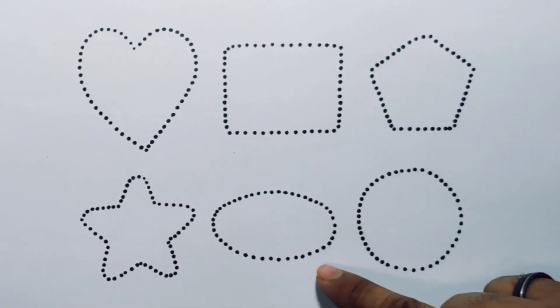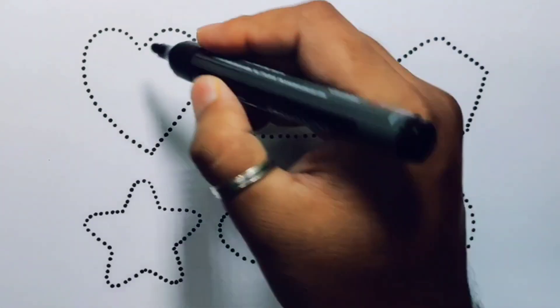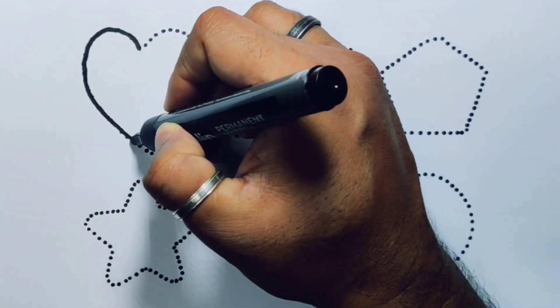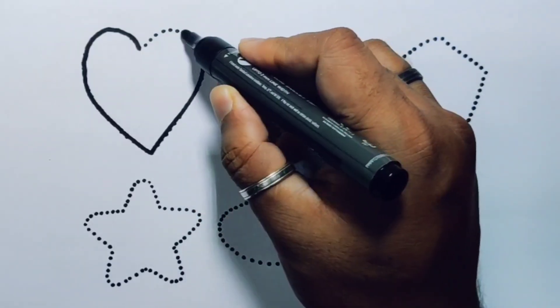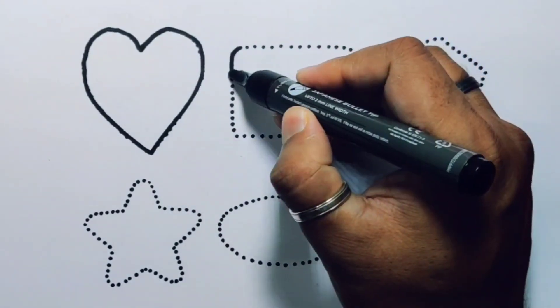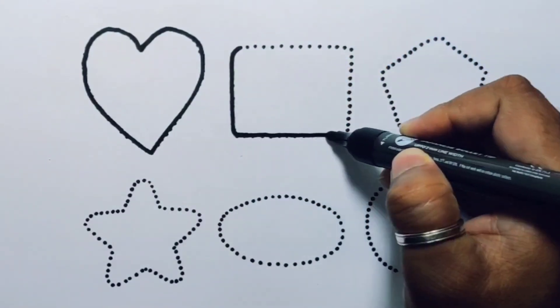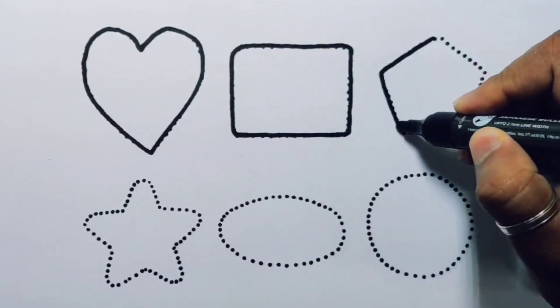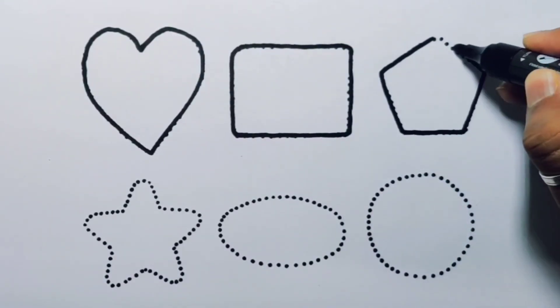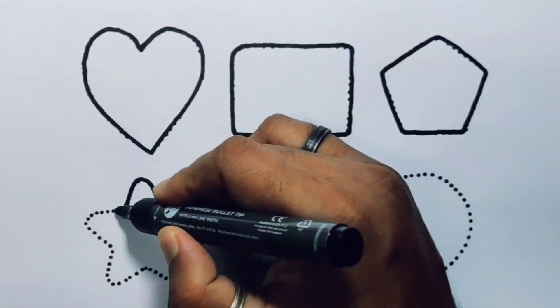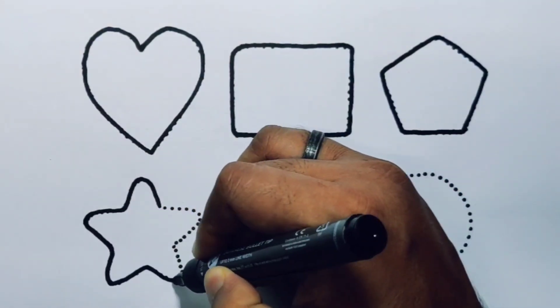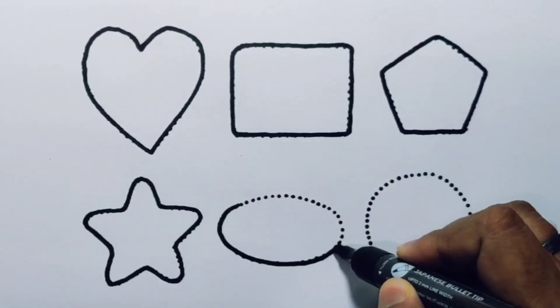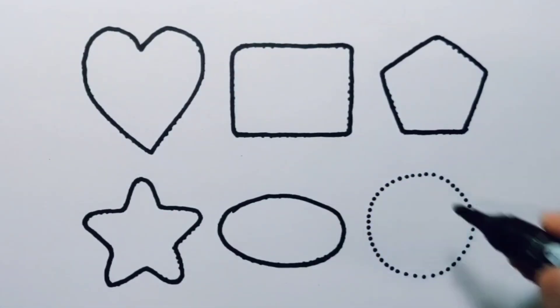First we're going to draw the shapes: heart, rectangle, pentagon, star, oval, and circle.